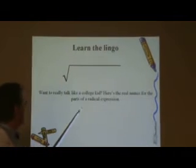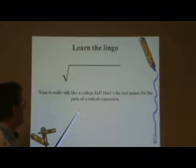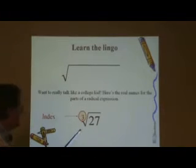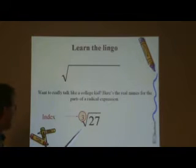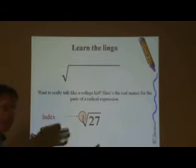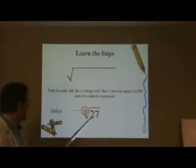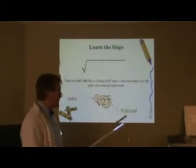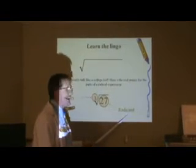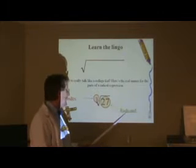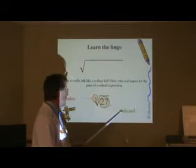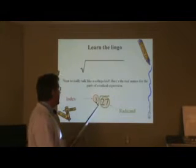We want to talk like a college kid here. Here's the real names for the parts of the radical expression. This number, small one, right above the little hook, is known as the index. That's exactly like the opposite of the power that we used to get this number inside. The number inside has a very special technical name. It's called the radicand. The radicand. Almost everything in mathematics has its own special name, and this is the name for this. Radicand is that thing that's underneath the radical sign.